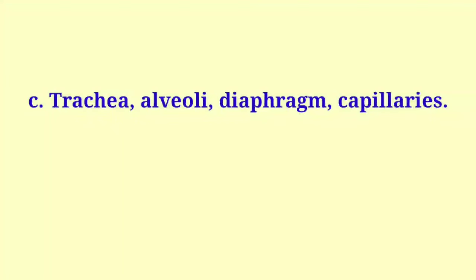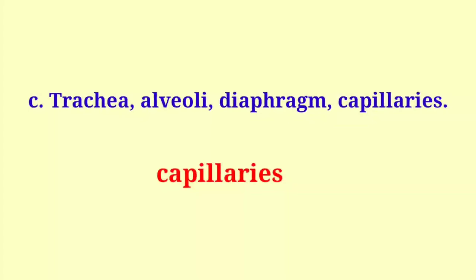Trachea, alveoli, diaphragm, capillaries. The odd one out is capillaries, because all others – trachea, alveoli, and diaphragm – are parts of the human respiratory system.